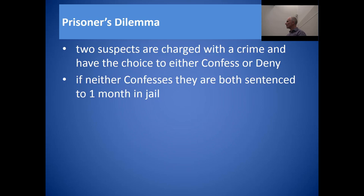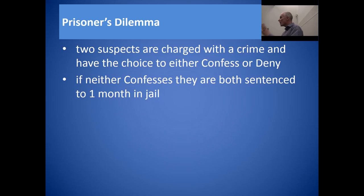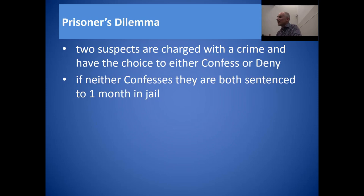The police take them and interview them in separate rooms. The choices are: deny or confess. If neither of the suspects confess — that is, if they both deny — the police don't have the confession they need. They can't convict them for the crime for which they've been arrested, so they convict them of some minor charge. For that, they will spend one month in prison apiece.